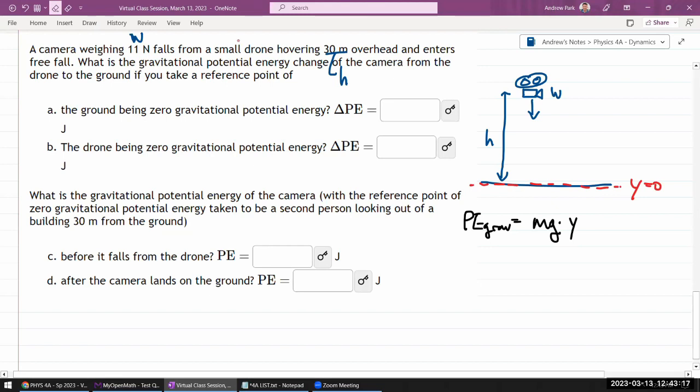If this is y equal to zero, your initial gravitational potential energy would be mg times the y coordinate at height h, which is h. And your final gravitational potential energy would be zero. So the difference of gravitational potential energy is your final minus initial.